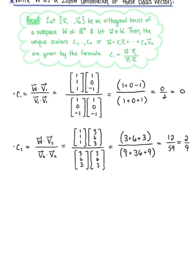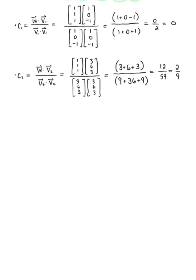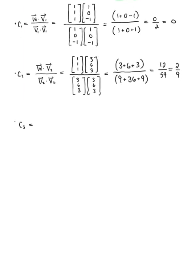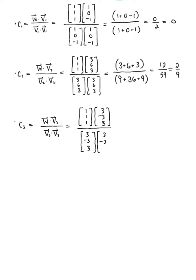Last but not least, we have unique scalar c sub 3, defined as the dot product of vector w with vector v sub 3 all divided by the dot product of vector v sub 3 with itself. We have vector 1, 1, 1 dotted with vector 3, negative 3, 3, and in the denominator the dot product of vector 3, negative 3, 3 with itself. In the numerator we have 3 minus 3 plus 3; in the denominator we have 9 plus 9 plus 9, which simplifies to 3 over 27, which reduces to 1 ninth.